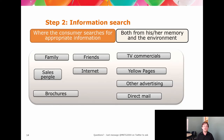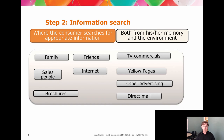Step two is information search. From a consumer perspective, you have internal and external search. From a marketer's perspective, this is where consumers come and seek — they look for adverts, marketing content, or consumer-generated content. This is where things like Yelp, review sites, and Amazon reviews come in. You're asking: is this worth my time? I have a problem I want to solve, how am I going to solve it?